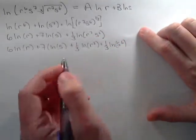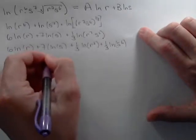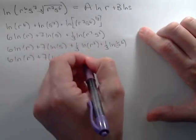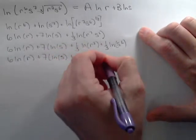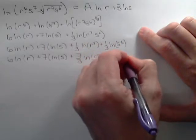These exponents can also be brought down. So we have 7 thirds natural log of r plus 6 thirds, which is the same as 2 natural log of s.